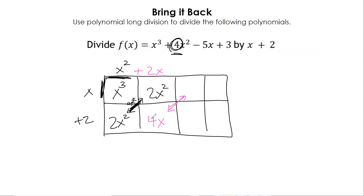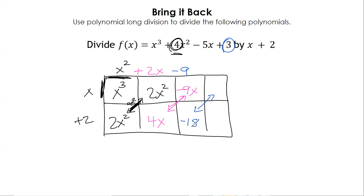Now we're going to add on the diagonal. So 4x plus what would give me negative 5x? That's negative 9x. Now you're going to say what times x would give me negative 9x — that's negative 9. Negative 9 times 2 is negative 18, and we add this diagonal together to get 21.